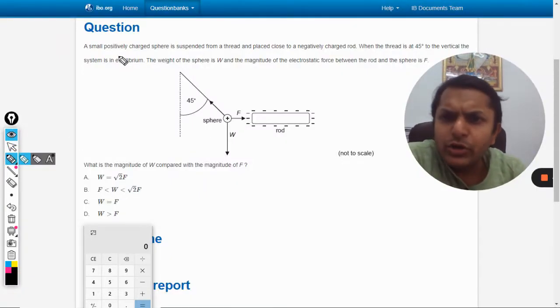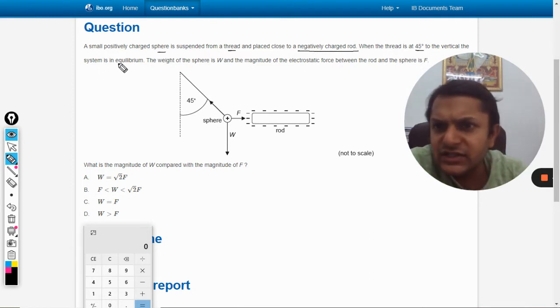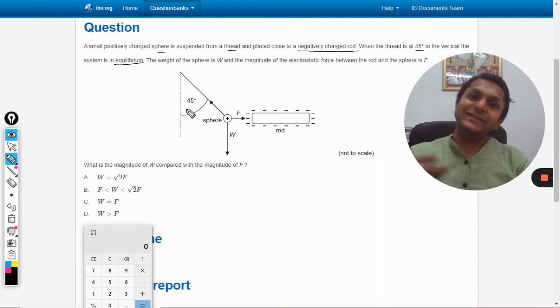A small positively charged sphere is suspended from a thread and placed close to a negatively charged rod. When the thread is at 45 degrees to the vertical, the system is in equilibrium.